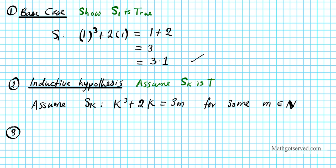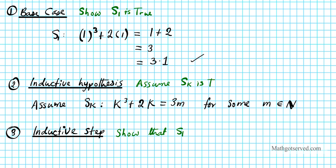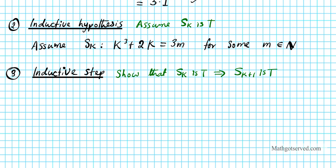We picked an arbitrary k and assumed it's true for that value. Now, can we show this implies the next step is also true? We want to show that if S(k) is true, it implies S(k+1) is also true. So we replace k with k+1 and see if we can write it as a multiple of 3, which will show it is divisible by 3.